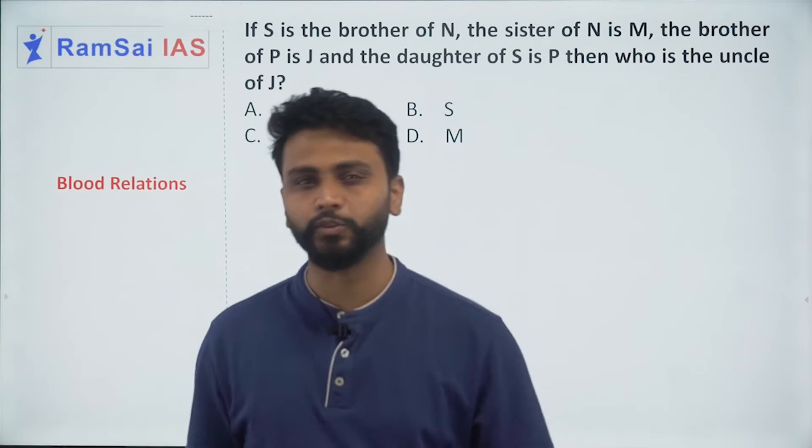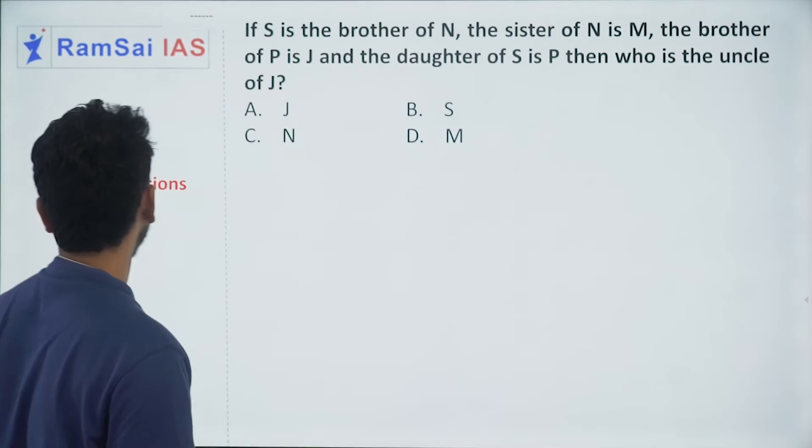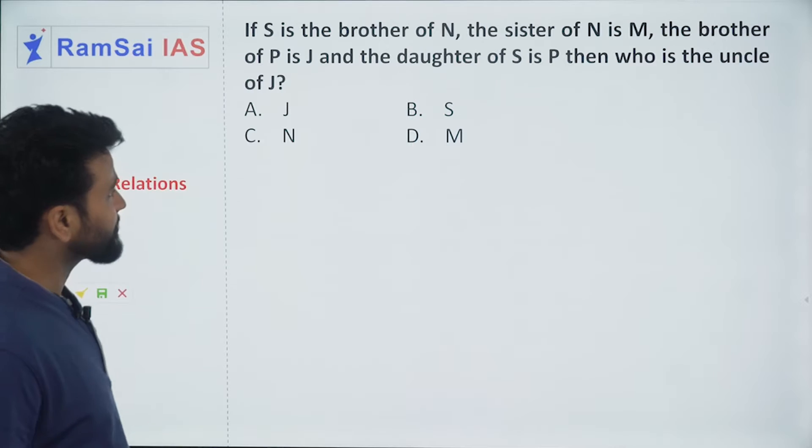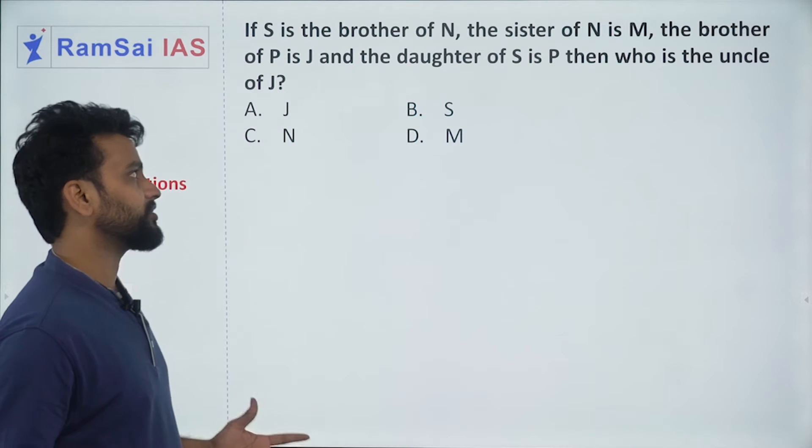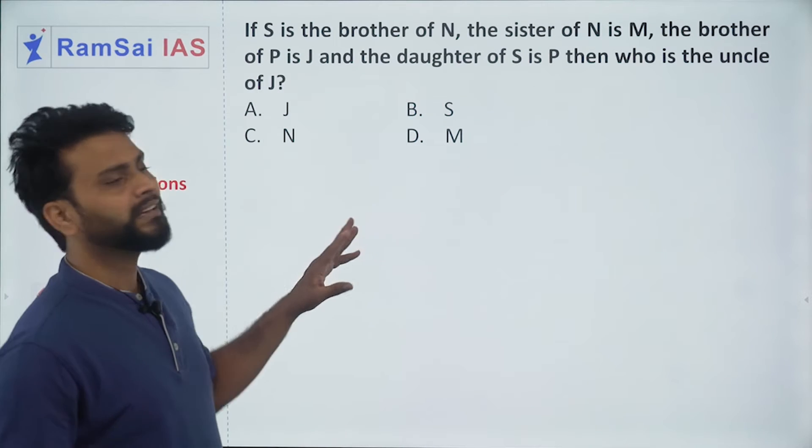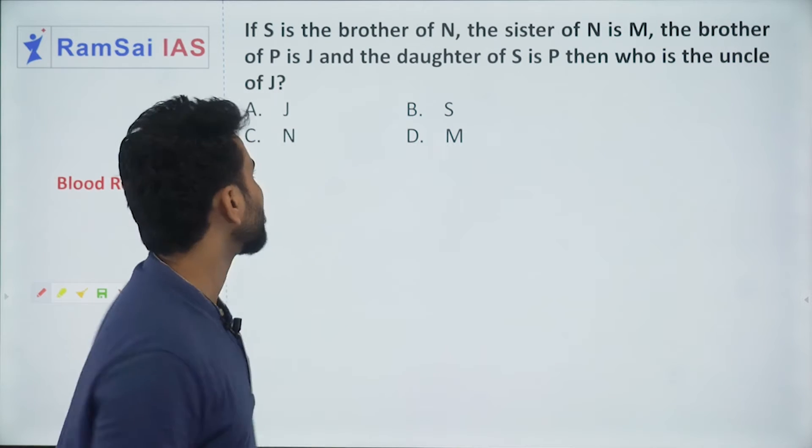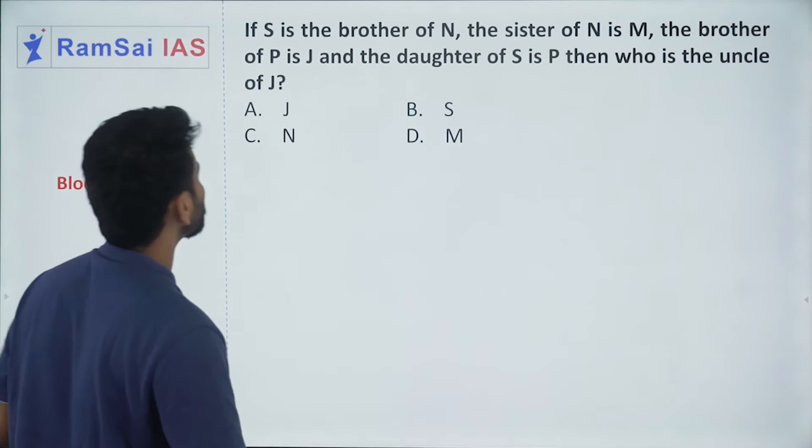Here in this question, I can find a total of 5 people: S, N, M, P, J. Three relations were given here. We need to find out one more relation.